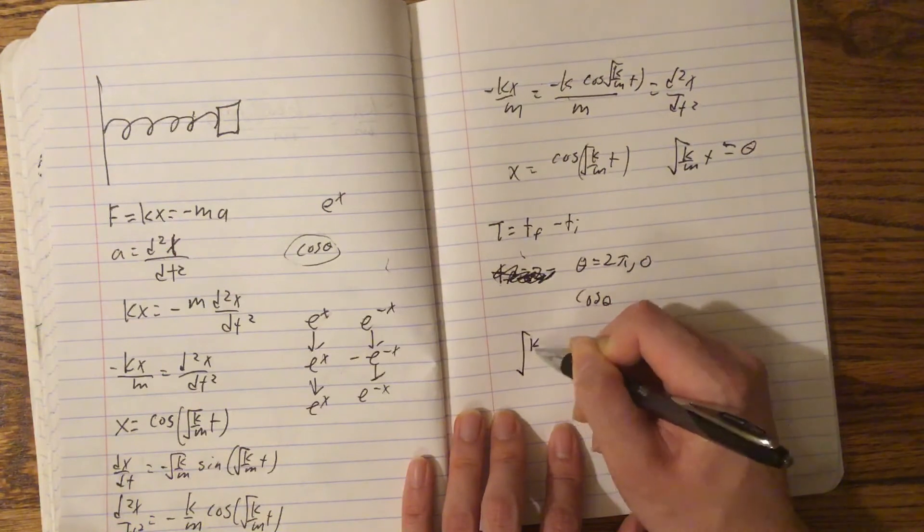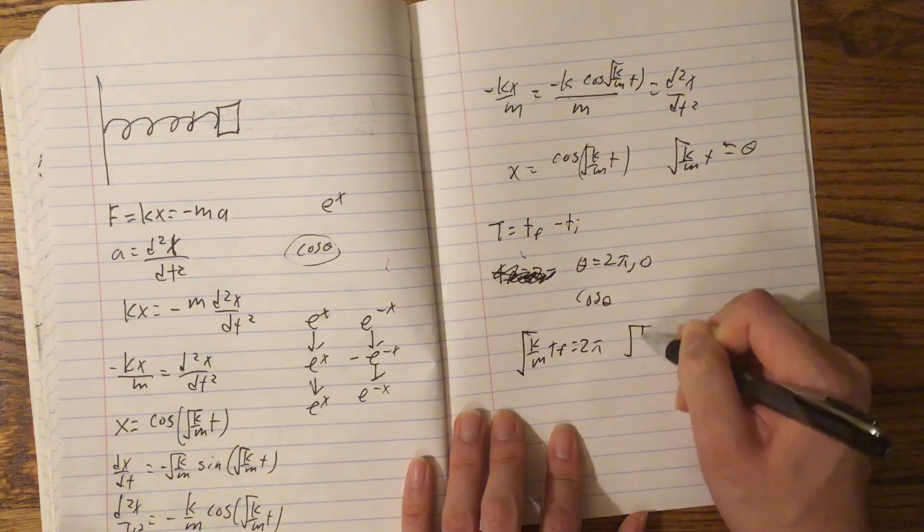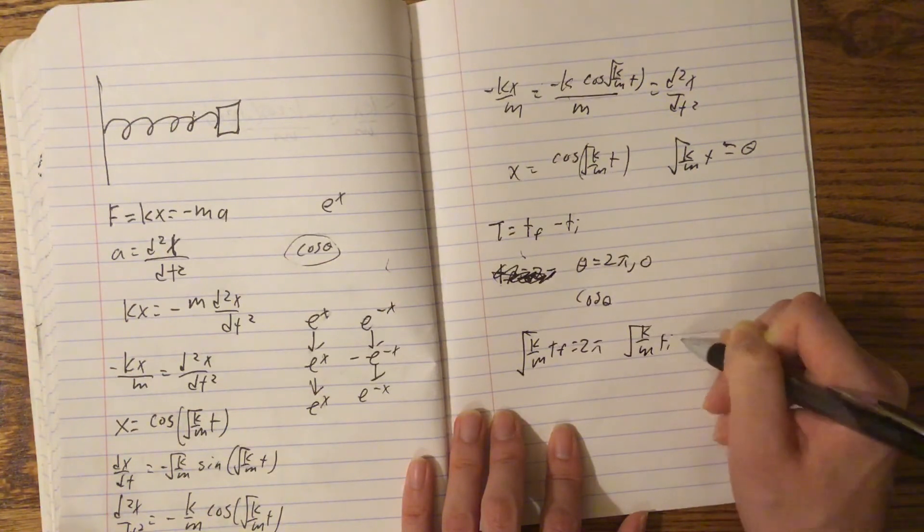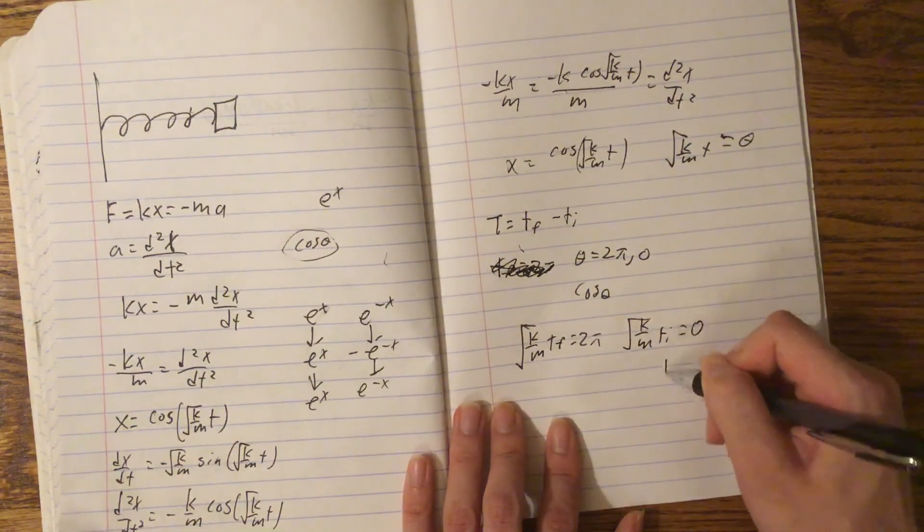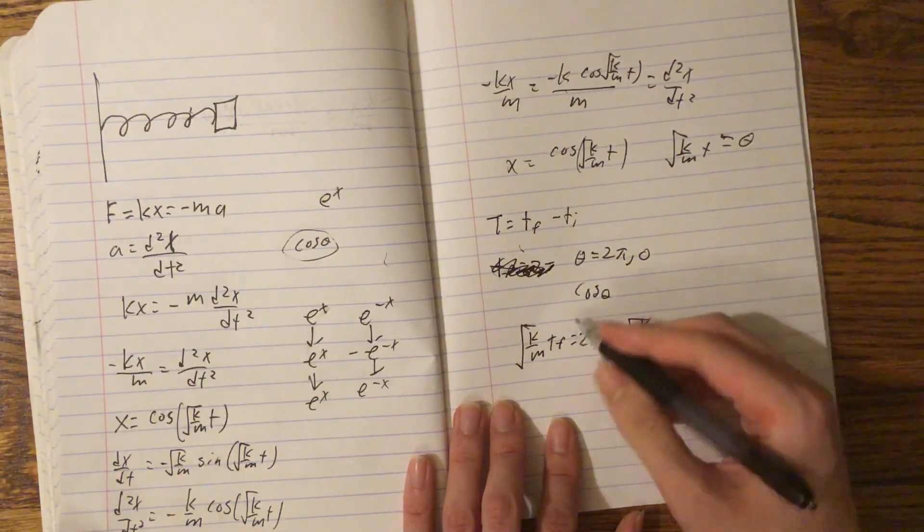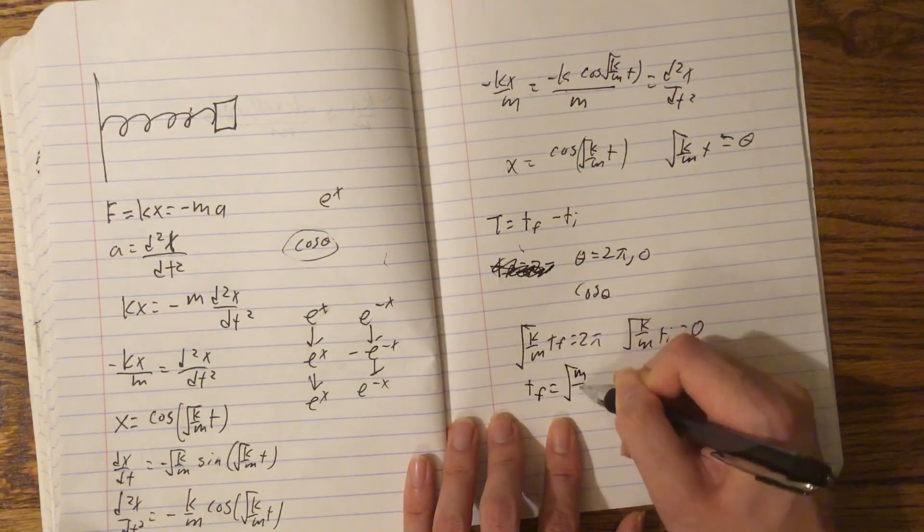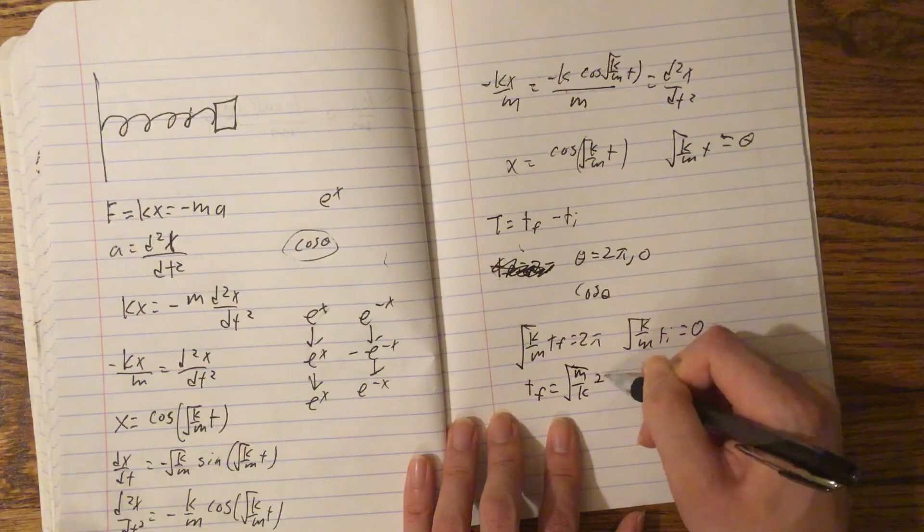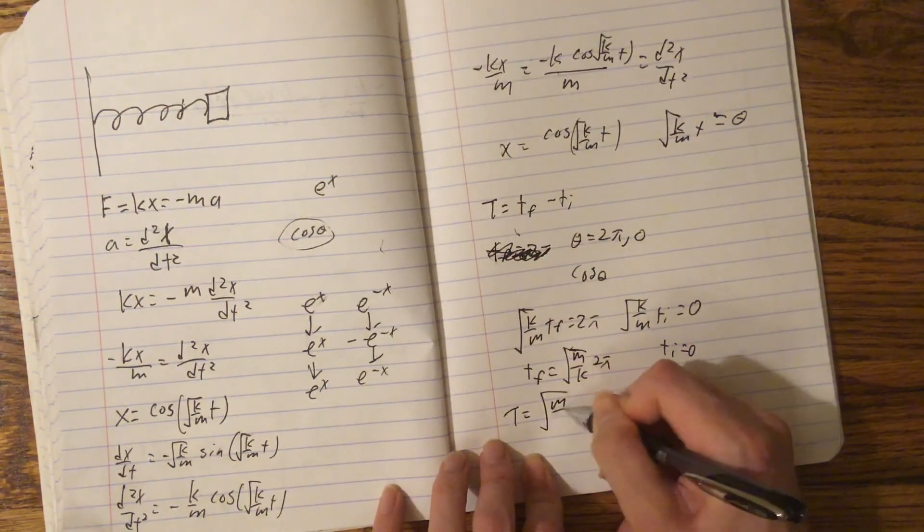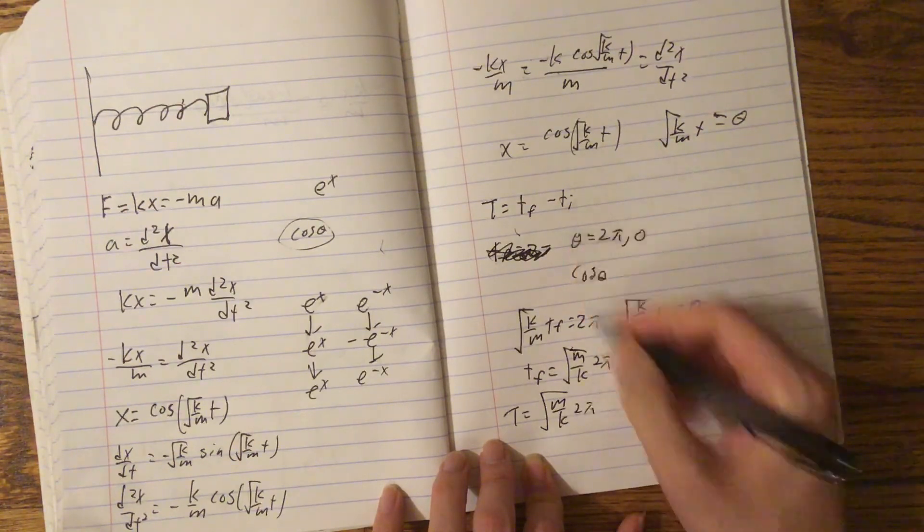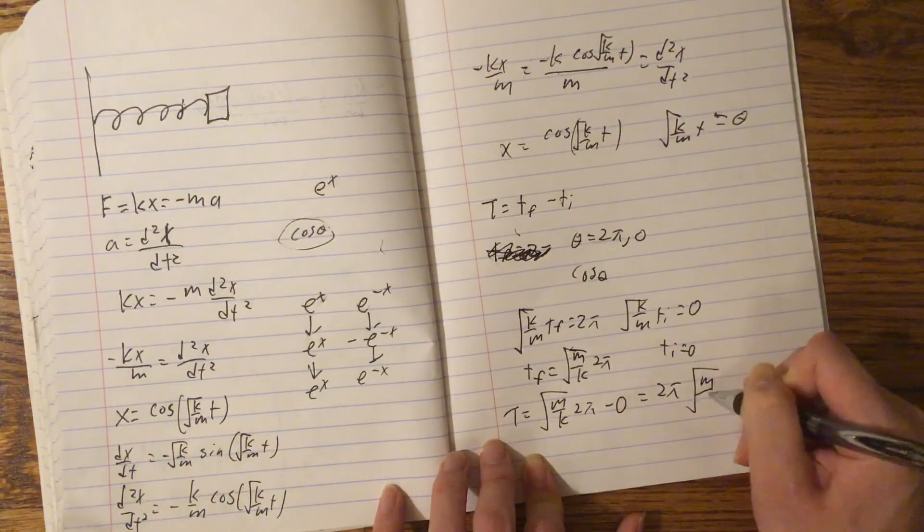So, root k m t final must equal 2pi, and root k m t initial must equal 0. Now, from here, we get that t initial equals 0. That's simple enough. And then we get that t final equals root m k 2pi. Now, if t equals the period equals this minus this, then the period just equals 2pi root m over k.